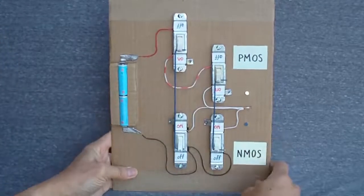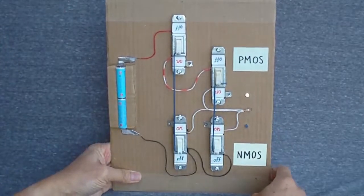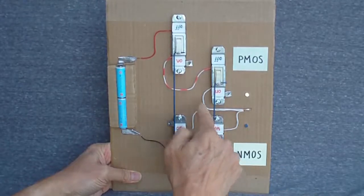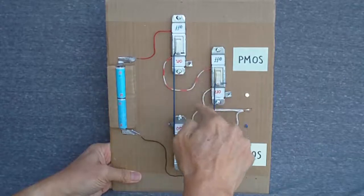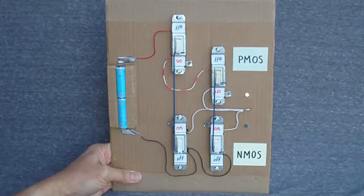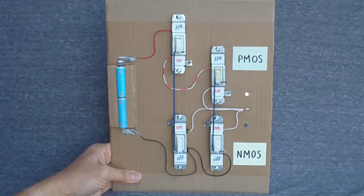Now we have a two input NOR gate. Right now both inputs are low, so both PMOS transistors are turned on, and both NMOS transistors are turned off. The output is connected to the supply voltage and disconnected from ground, so the voltage is high or logic one.